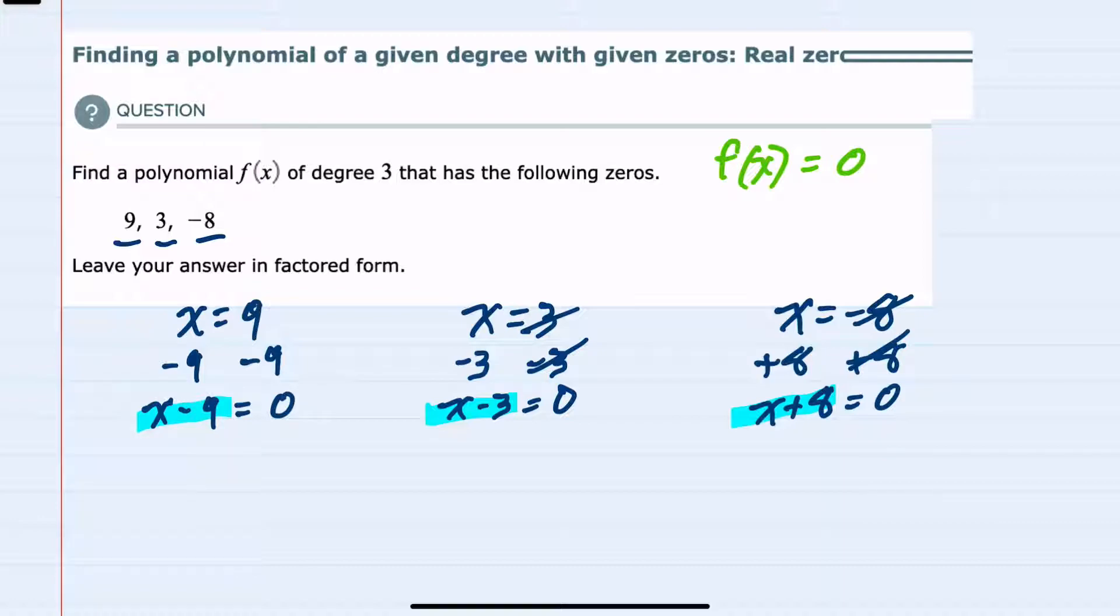So having turned each of these three solutions into factors I can write the function f of x. Each one of these are factors meaning that they are multiplied x minus 9 times x minus 3 times x plus 8.